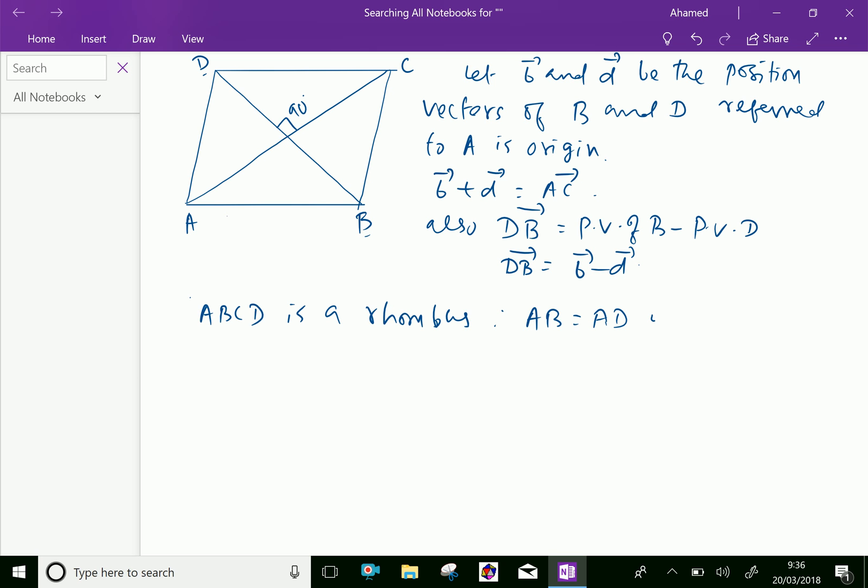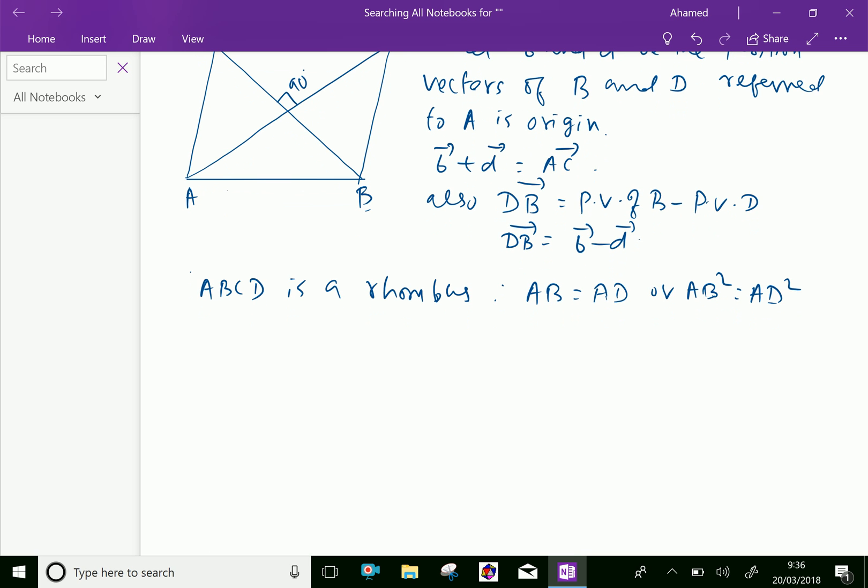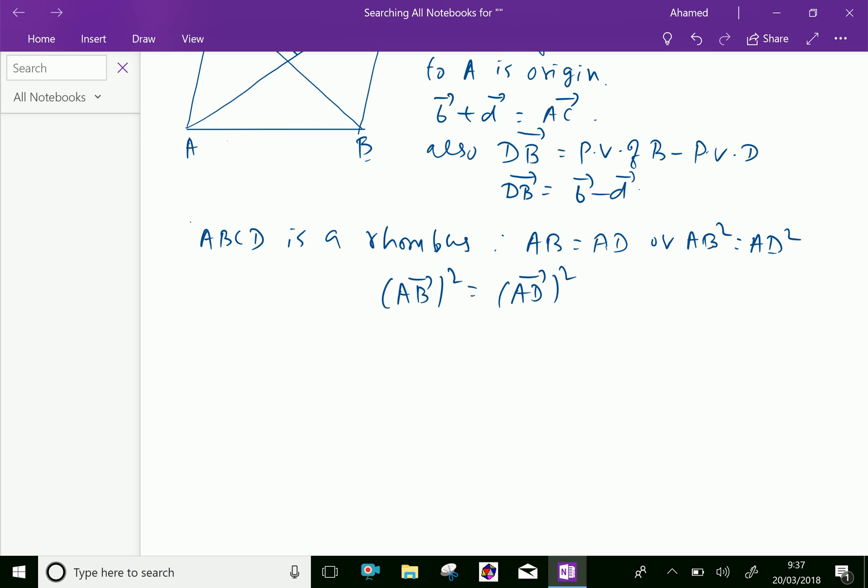Also, or you can say AB squared equals AD squared. Now, instead of AB squared equals AD squared, we can write vector AB squared equals vector AD squared. Now, already we have vector AB is vector B, so vector B squared equals vector D squared.